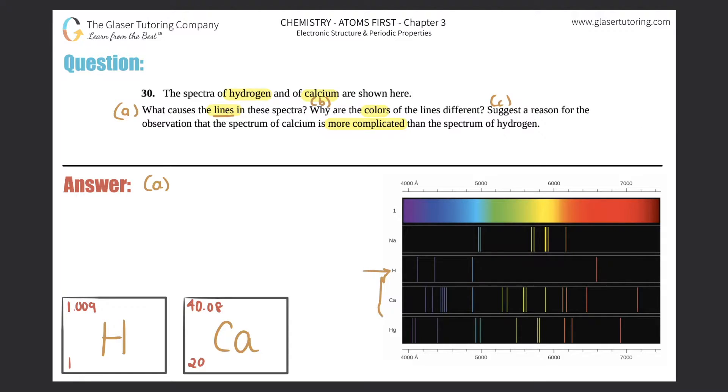They're talking specifically about hydrogen and calcium, so I'm going to be looking at hydrogen and calcium. What do those lines represent? Well, every single line represents a specific wavelength.